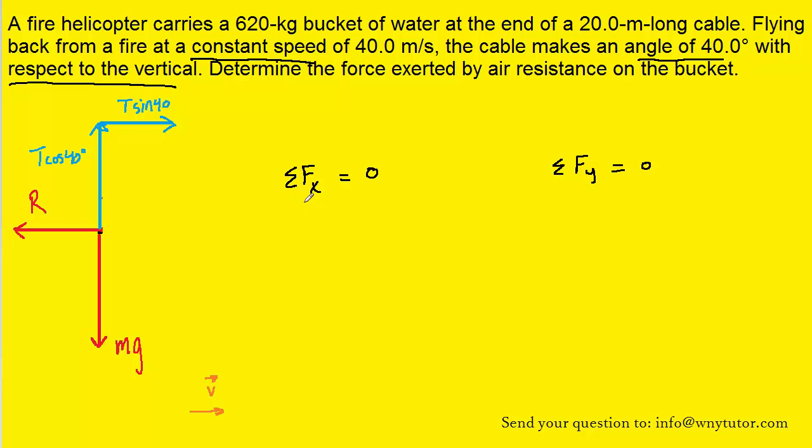We can now turn to the sum of the forces in the x direction. We can see from the diagram there are two forces acting in the x direction. We have t sine 40 which is pointing to the right and is therefore positive, and the air resistance force r which is pointing to the left and is therefore negative. Let's fill those into this equation.